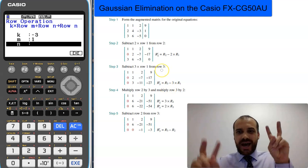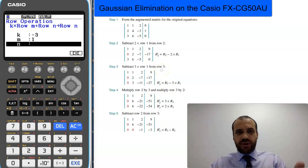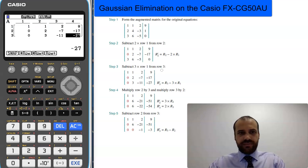Then we're adding negative 3 times row 1 to row 3. We have this: 0, 3, negative 11, negative 27. And now we can do these ones. We have to do them one at a time.